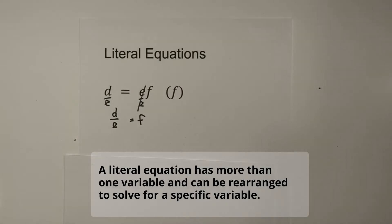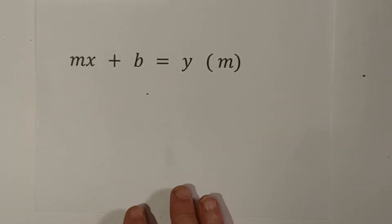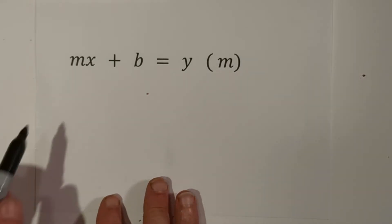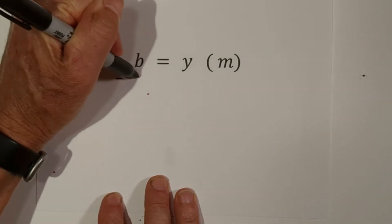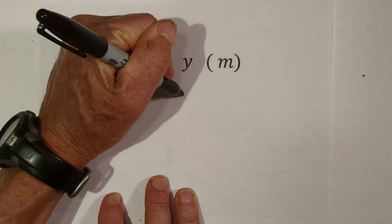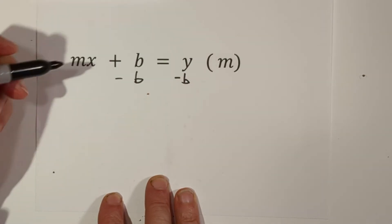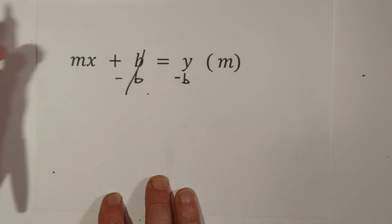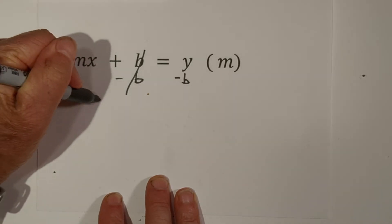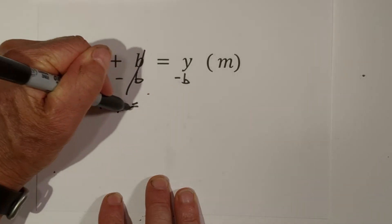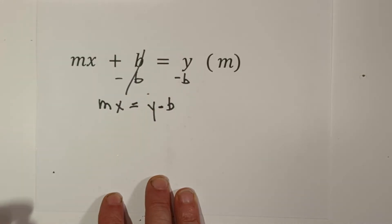Let's look at another example. On this one we're going to solve for M. So the very first thing we're going to do is we need to get M by itself. Let's subtract B from each side. So that's Y minus B. So we can rewrite it. These will cancel, so we have MX equals Y minus B.